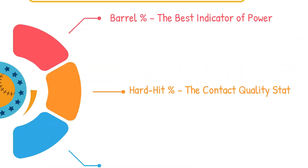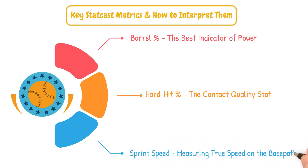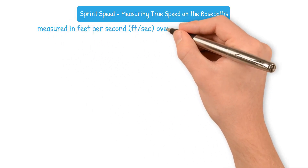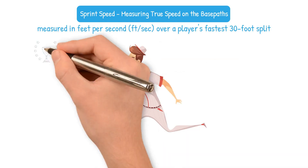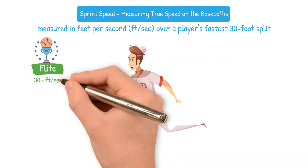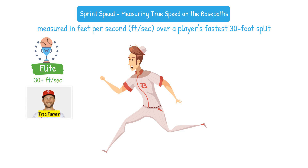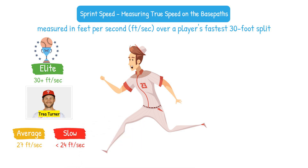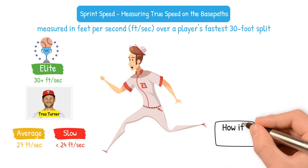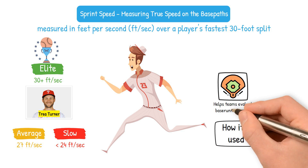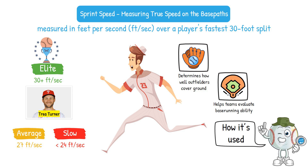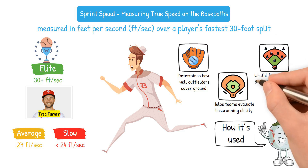Next, we can look at sprint speed — measuring the true speed of players on the base paths. StatCast tracks sprint speed in feet per second over a player's fastest 30-foot split. Elite is 30-plus feet per second — think Trea Turner. The MLB average is 27 feet per second, and the slow range is below 24 feet per second, think catchers and older veterans. You can apply this to evaluate base running ability, determine how well an outfielder covers ground, and project stolen base potential.